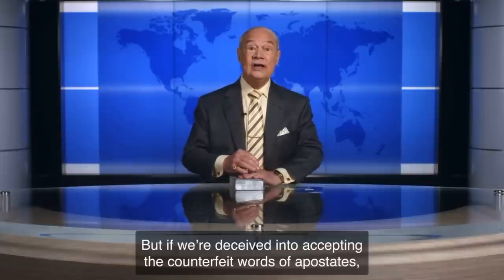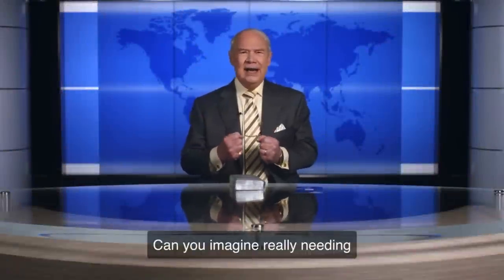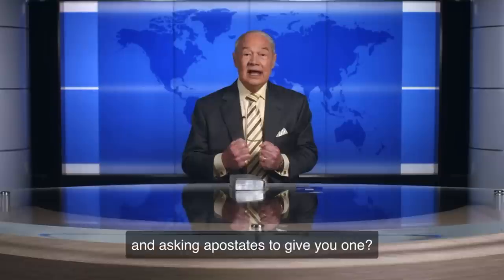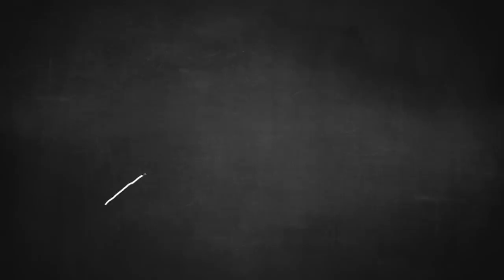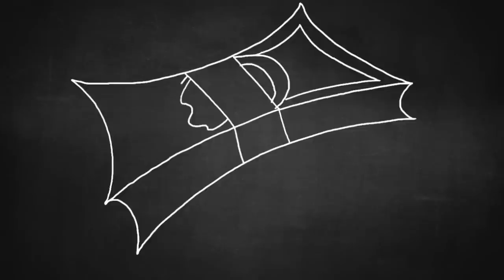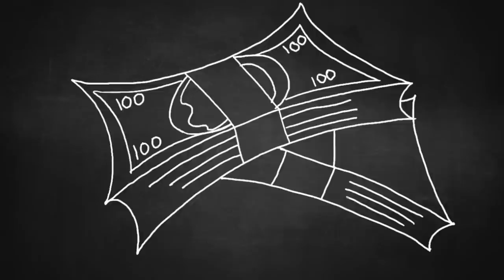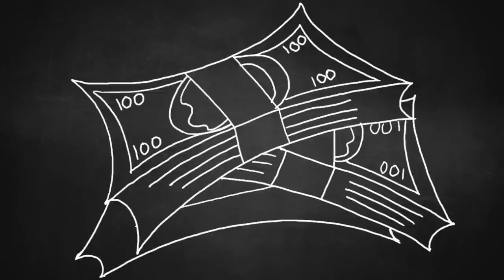But if we're deceived into accepting the counterfeit words of apostates, we'll lose our life. Can you imagine really needing a loving shepherding visit and asking apostates to give you one? Here's the carrot. We have your friends and family on this side of the fence. If you stay, you can remain friends with them. You can receive shepherding visits from other Jehovah's Witnesses. Here's the stick. If you leave, you lose your life. This is an example of him building in fears and phobias. Again, this is a hallmark of a cult. If I approach this group in a vacuum, these are the exact traits I'd look for to see if it was a destructive cult or not. It's almost like they read the psychology literature on destructive cults and said to themselves, yeah, I'll take that. Keep watching.